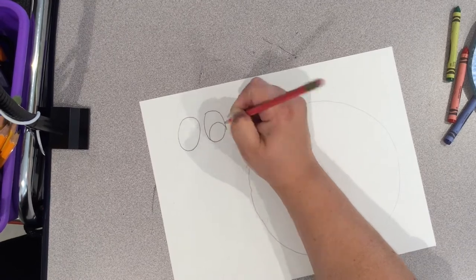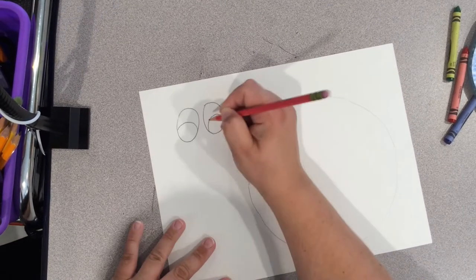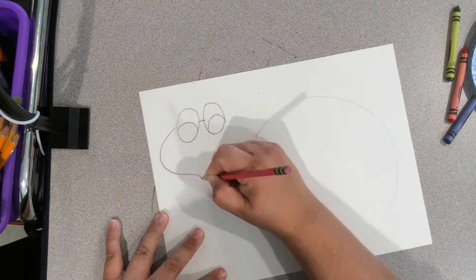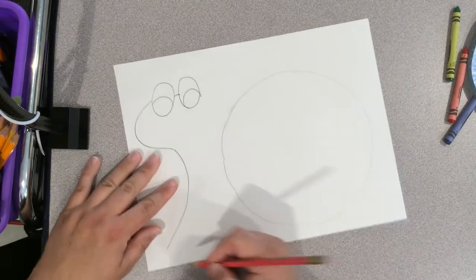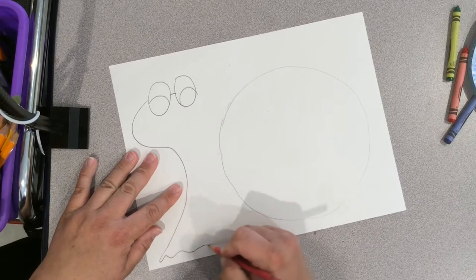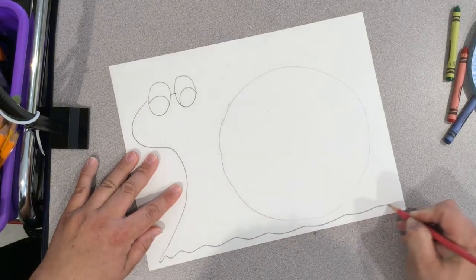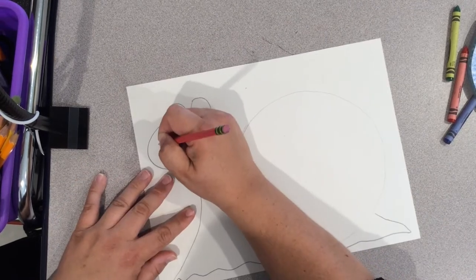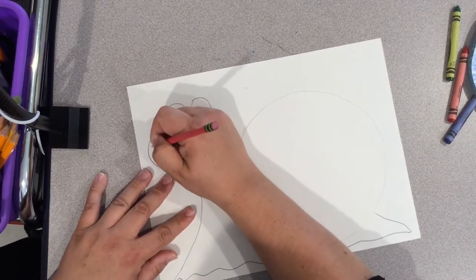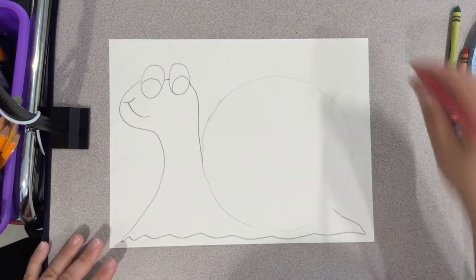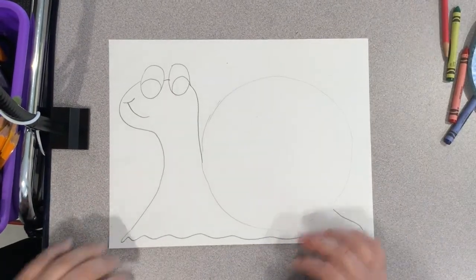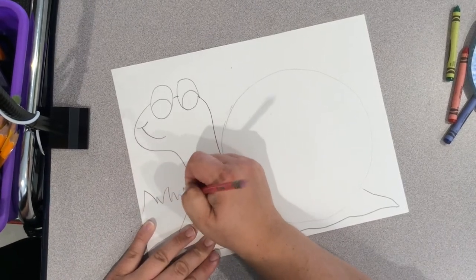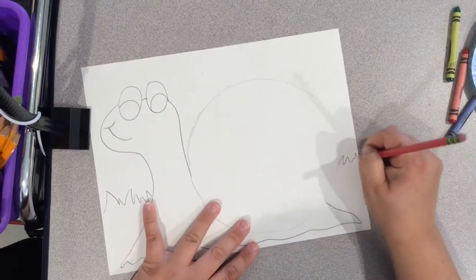I'm going to start with two ovals for the eyes and add a rainbow shape on the inside. I want to connect it and come around for his face. Come down, do a wavy line across the bottom and bring it over for a little tail. Connect the head to the body. I'm going to make a happy snail.